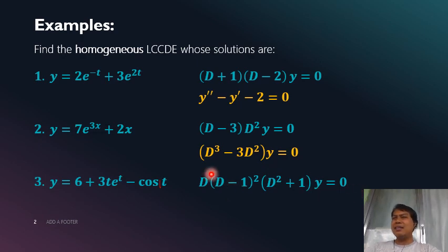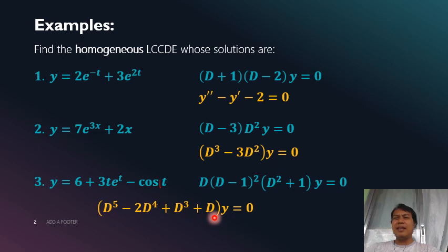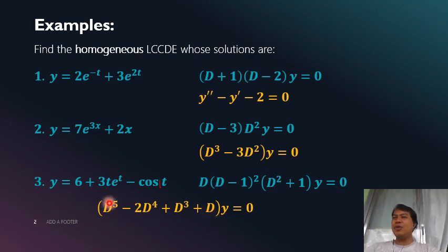We can rewrite this expanded form as the corresponding fifth order differential equation. If you are given this DE and solve it, you should obtain a solution that looks like the one we started with. So that's it — the topic is quite easy. If you remember our topic in finding the solution of a homogeneous LCCDE, this is just the opposite process. That's the end of our topic. I hope you learned something — bye!